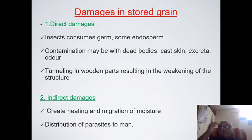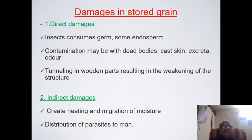Indirect damages include heating and migration of moisture — when insects respire, heat is released and migration of moisture from one place to another takes place. There is also the distribution of parasites to humans, as there are plenty of chances that parasites can be transported to humans.